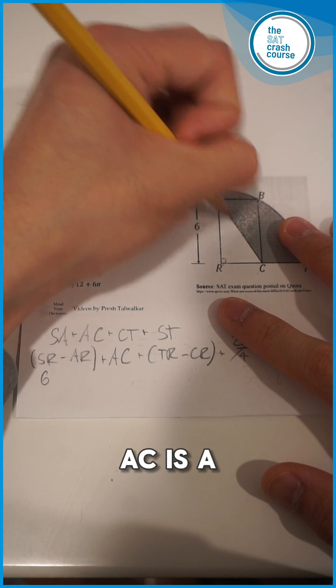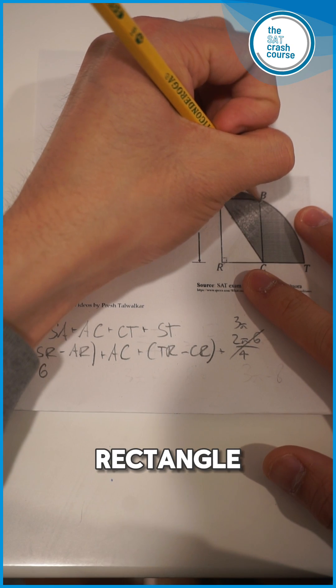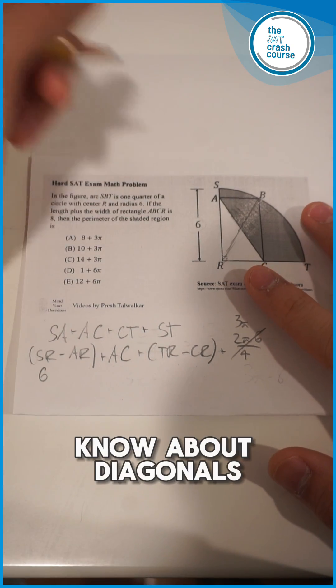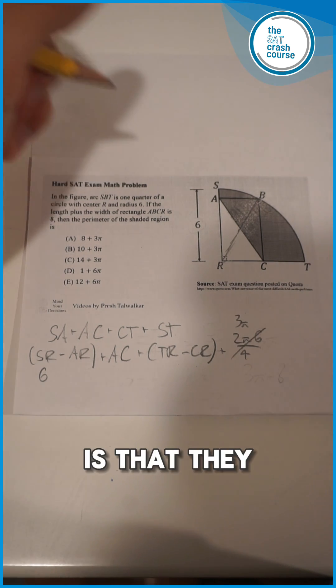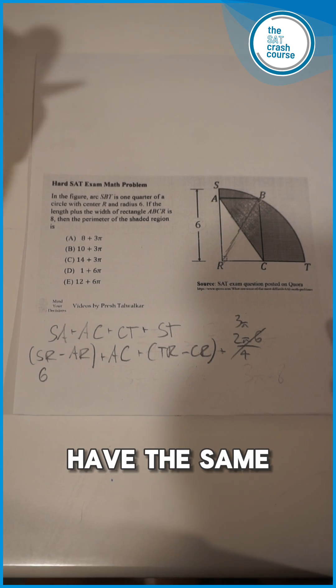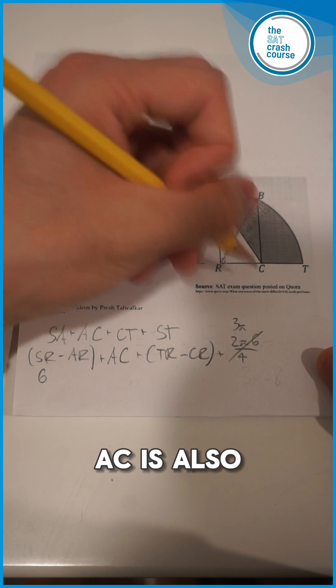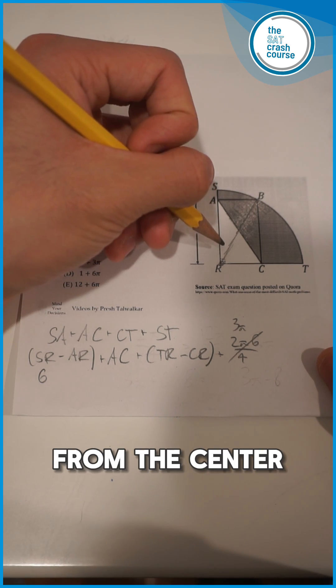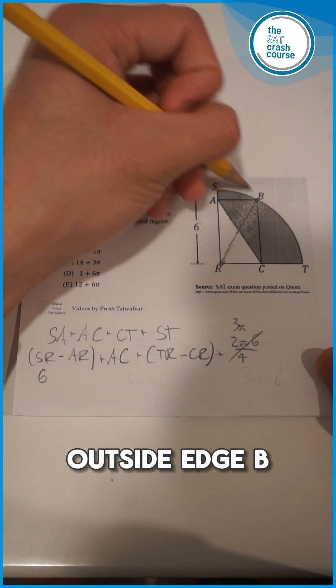We also actually know that AC is also going to be 6. This is because AC is a diagonal of the rectangle, and BR is also another diagonal. And what we know about diagonals and rectangles is that they are actually congruent, meaning that they have the same side length. So this AC is also going to be 6, and BR is a radius as it extends from the center R to an outside edge B.